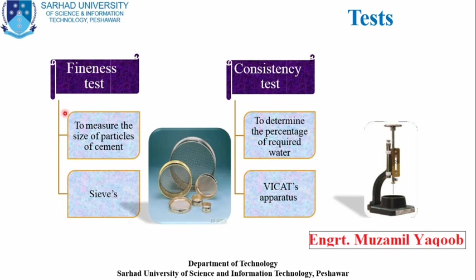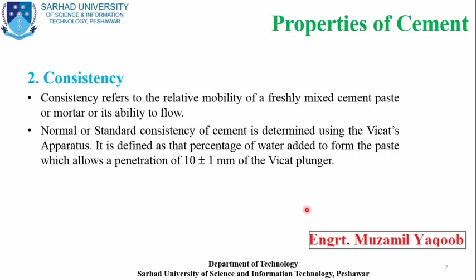To check fineness, a fineness test is performed using an apparatus called sieves to measure the size of cement particles. For consistency, the Vicat apparatus is used. Consistency means the relative mobility of a fresh cement paste or mortar, or its ability to flow. With the help of the Vicat apparatus, the consistency of cement is measured.